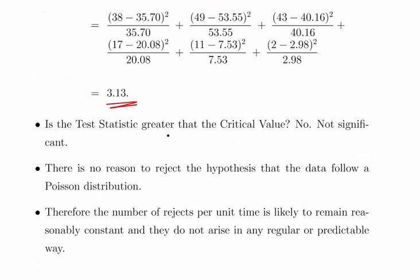Is the test statistic greater than the critical value? No, it's not significant. It's not significantly different from the expected Poisson values. That means there's no reason to reject the null hypothesis that the data follows a Poisson distribution. The number of rejects per unit time period is expected to remain reasonably constant, and they do not arise in any regular or predictable way. They're random.